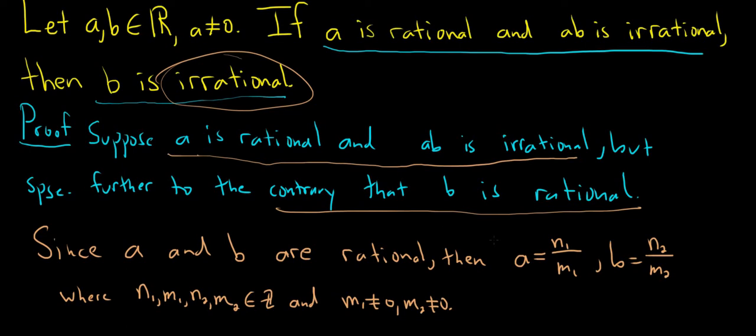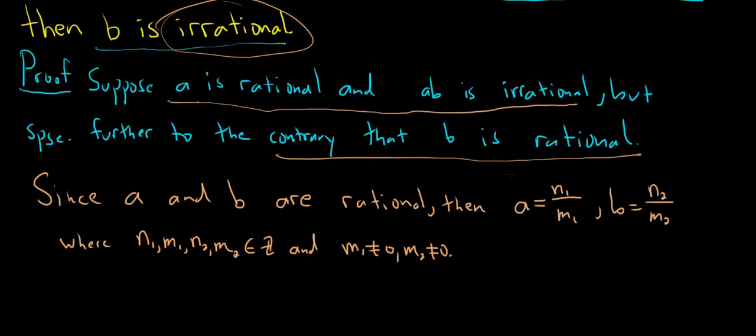So now what we'll do is we'll look at A times B because we know A times B is supposed to be irrational. But note A times B is going to be N1 over M1 times N2 over M2.